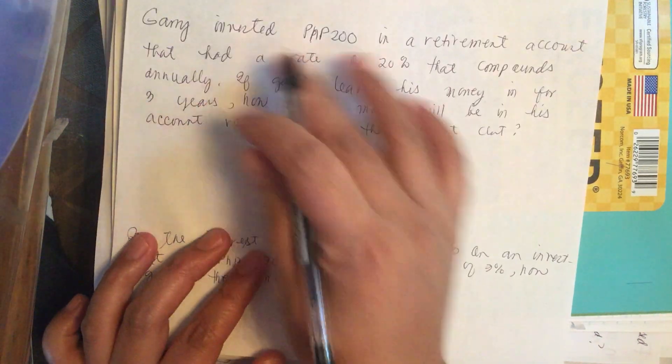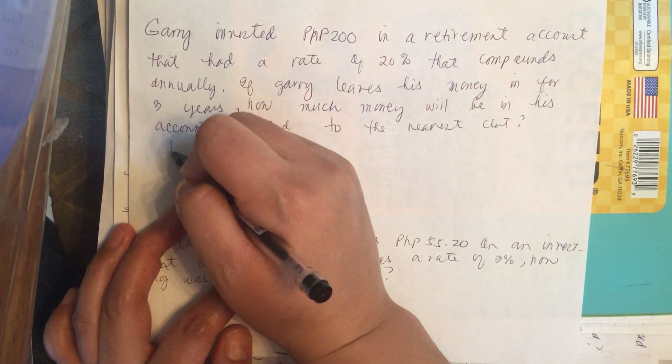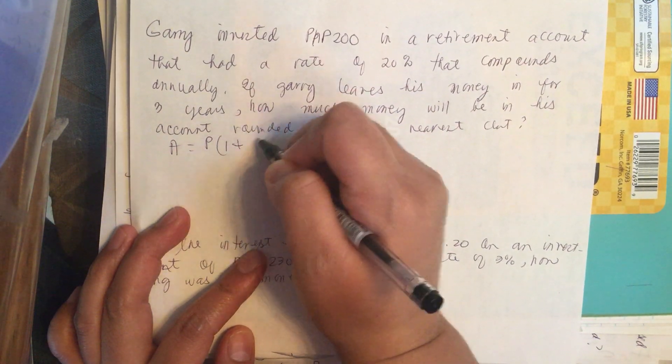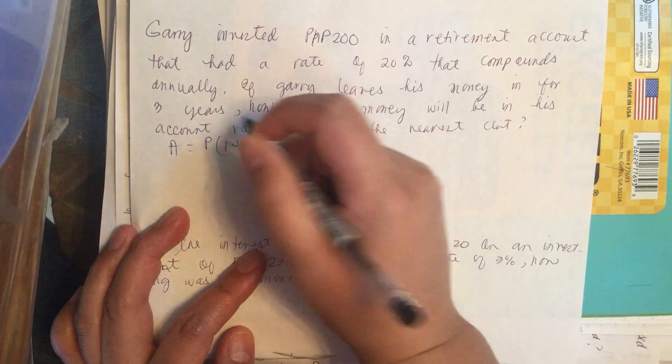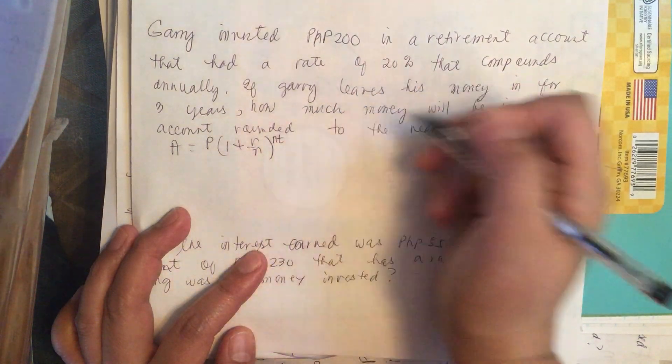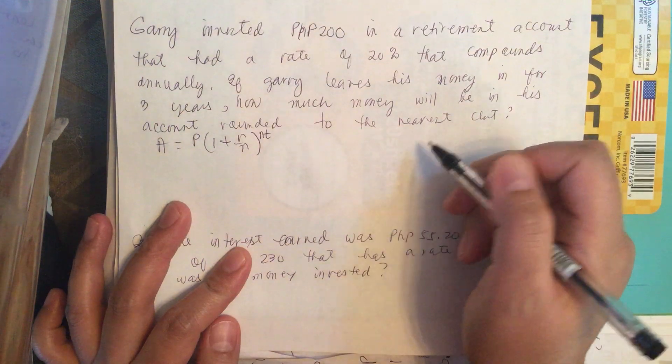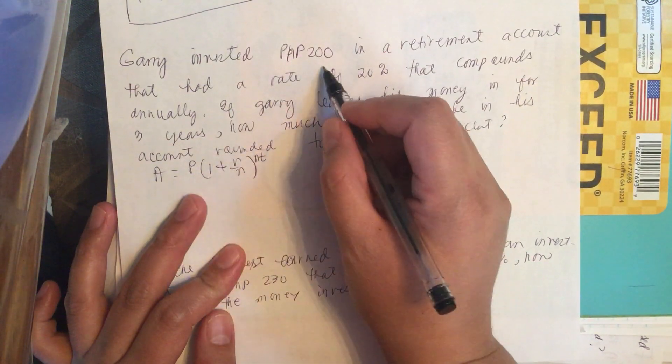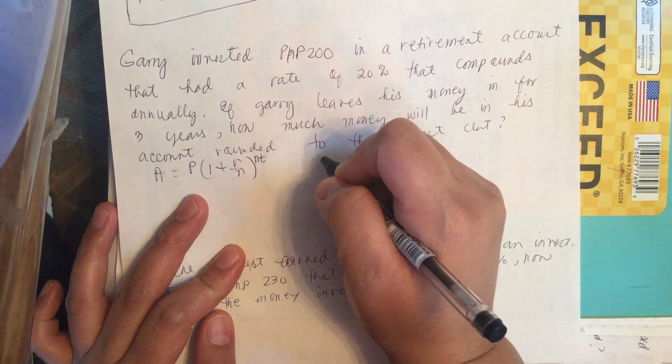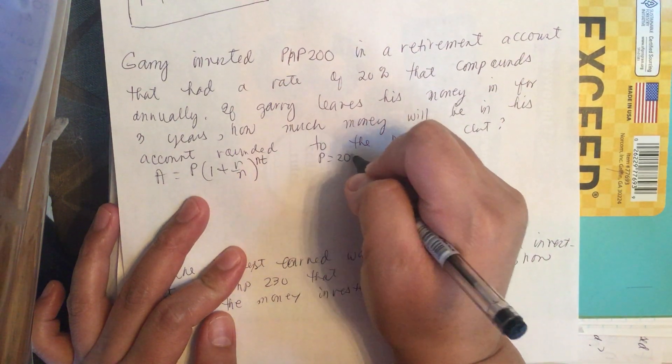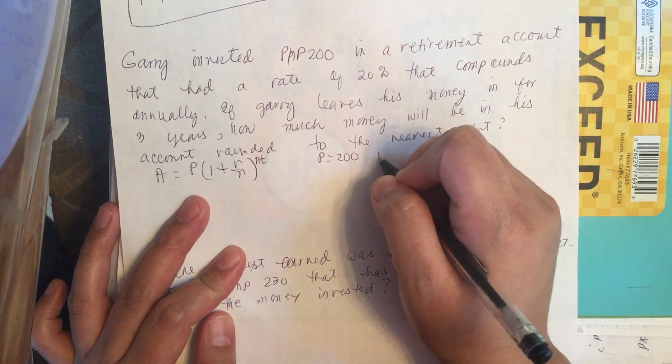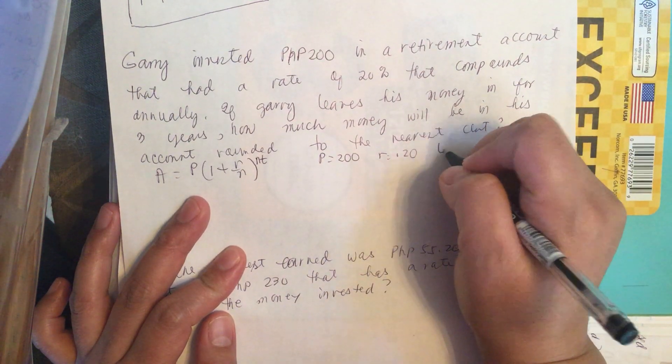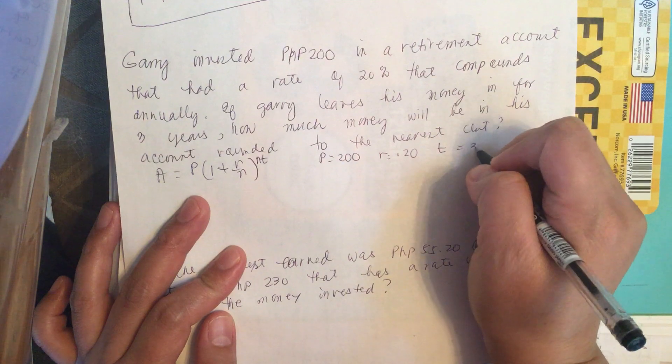The formula for compound interest is A is equal to P times (1 plus R over N) to the Nt power. So let's make our parameter list. P is equal to 200, and R is equal to 20% or 0.20, and T is equal to 3.